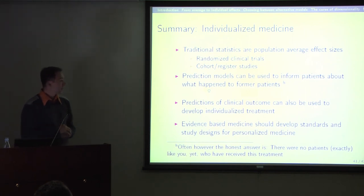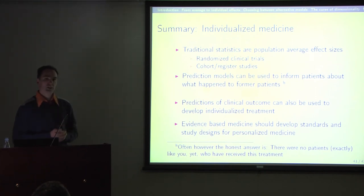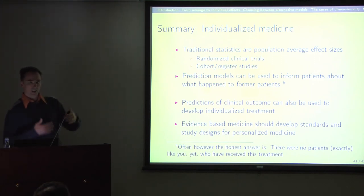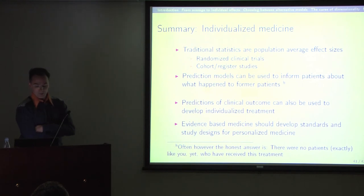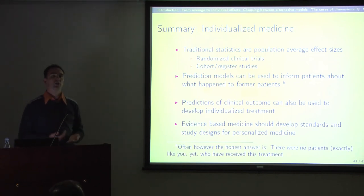To sum up: traditional statistical procedures are well established for randomized clinical trials and cohort studies. To move toward individualized medicine, we can use prediction modeling. However, applying prediction models requires a great deal of work, as illustrated by all these examples. It could well be that prediction models can be used to recommend individualized treatment. What is still missing are the standards — what is the standard clinical trial required to establish a new gene signature or a new individualized treatment?